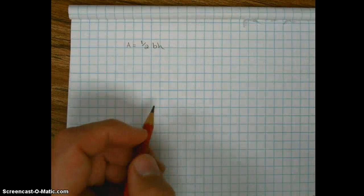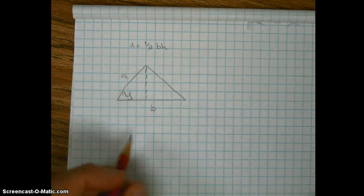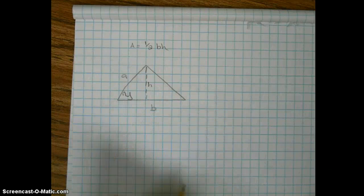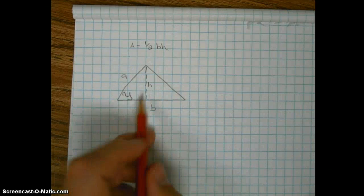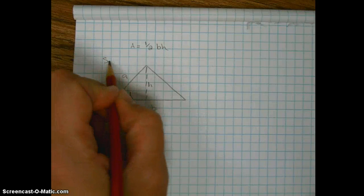What we're going to look at today is what happens if we're asked to find the area of side angle side triangles. So here we do not know the height but we are given a side angle side triangle.